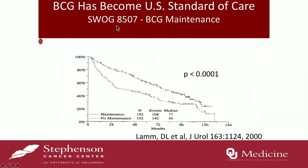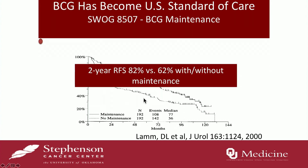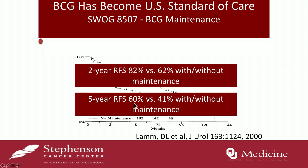That is based on data from the SWOG 8507 trial, which Dr. Lerner referenced. Patients who received maintenance versus those who did not had an overall improved recurrence-free survival: 82 percent versus 62 percent at two years, and 60 versus 41 percent at later follow-up. Maintenance should be given to every patient with high-risk non-muscle invasive bladder cancer.